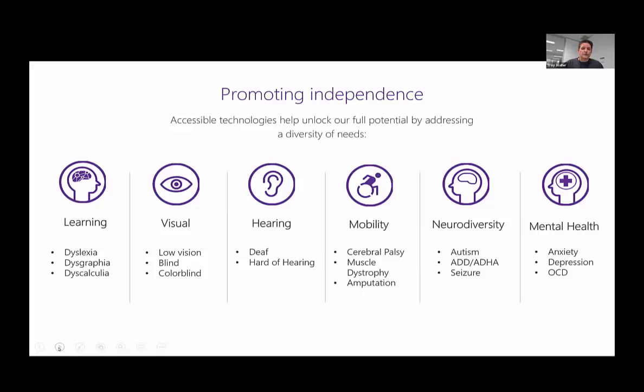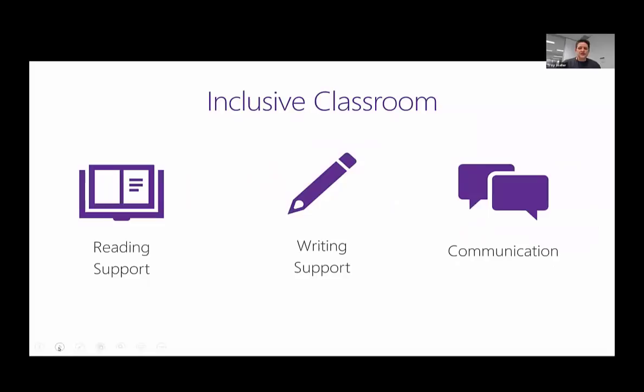Our inclusive classroom message covers three areas. The first is reading support — a lot of what we have helps people read, not just in education but in the workplace and day-to-day life. The second is writing support — we have great tools and features to support you in your writing. The third is communication, with tools to support people in EAL and other contexts. We'll go through and have a look at those, and hopefully some of these will grab your attention.